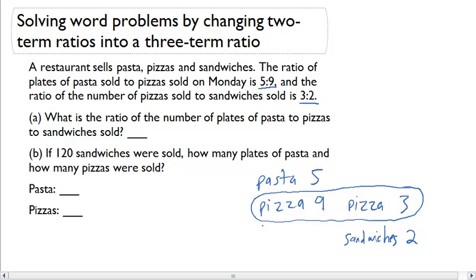Right now pizza is 9 in the first ratio but only 3 in the second ratio. Well, what I can do is find an equivalent ratio by multiplying each of these terms in my second ratio by 3. That will give me a ratio of 9:6, and now I have pizza is 9 in both ratios.